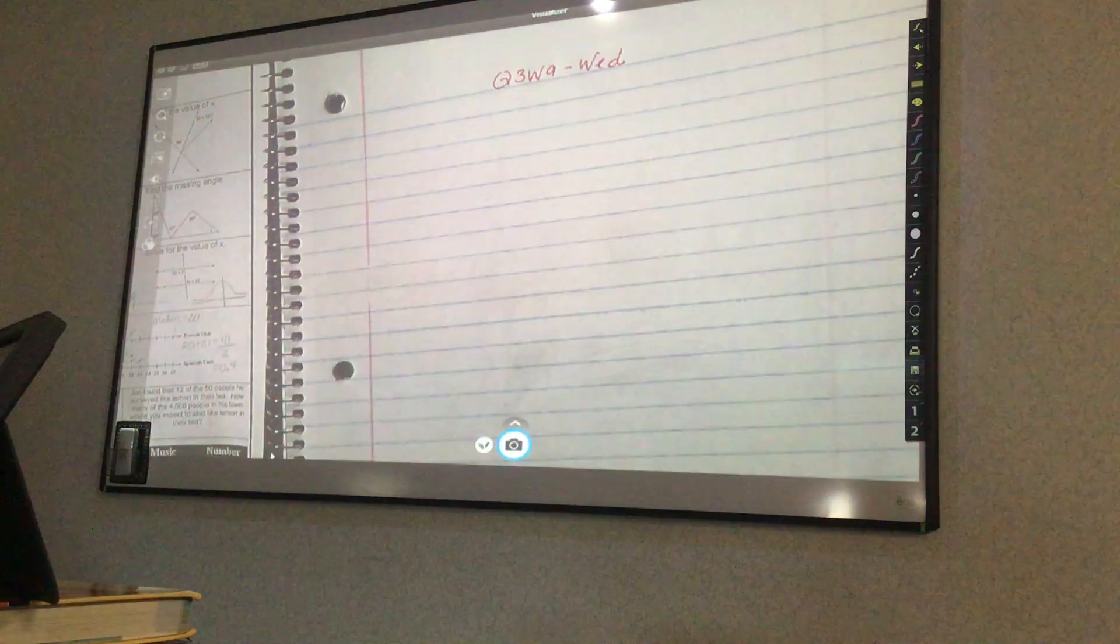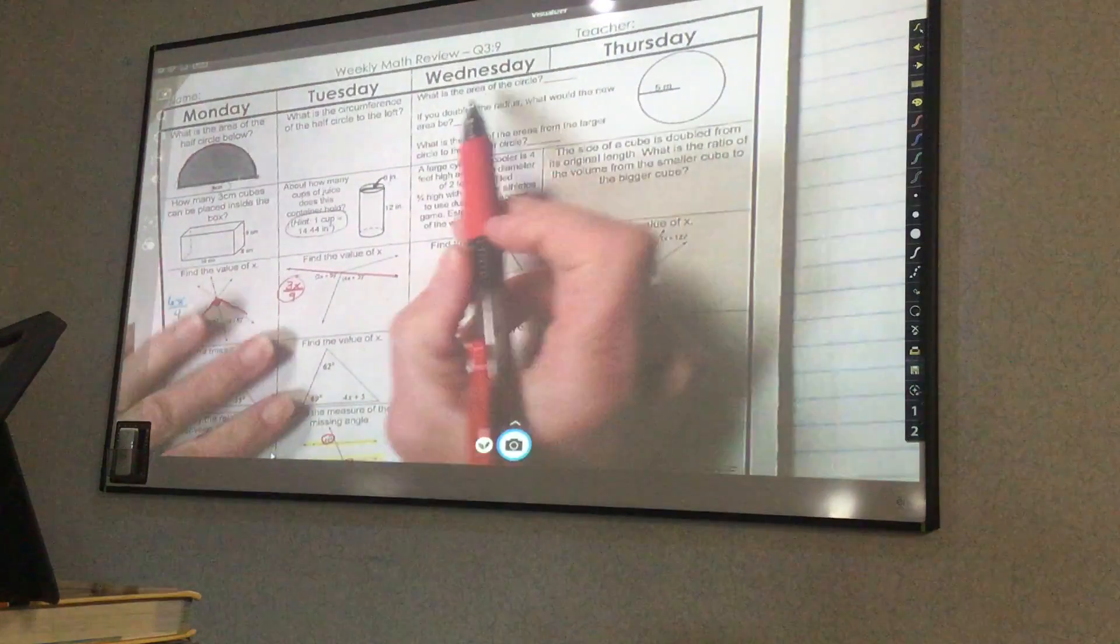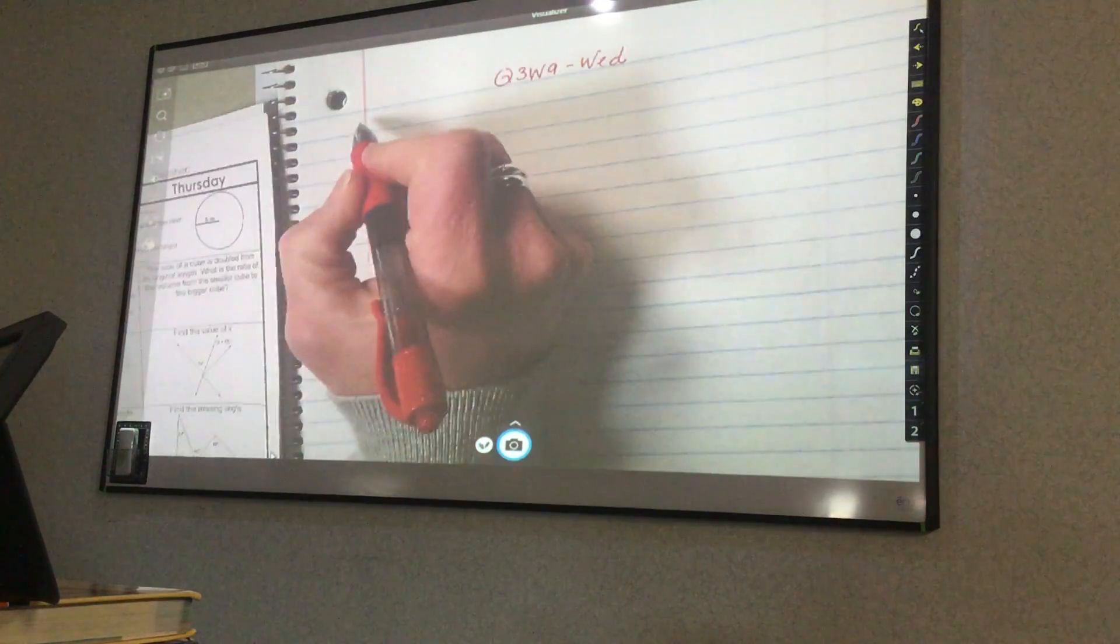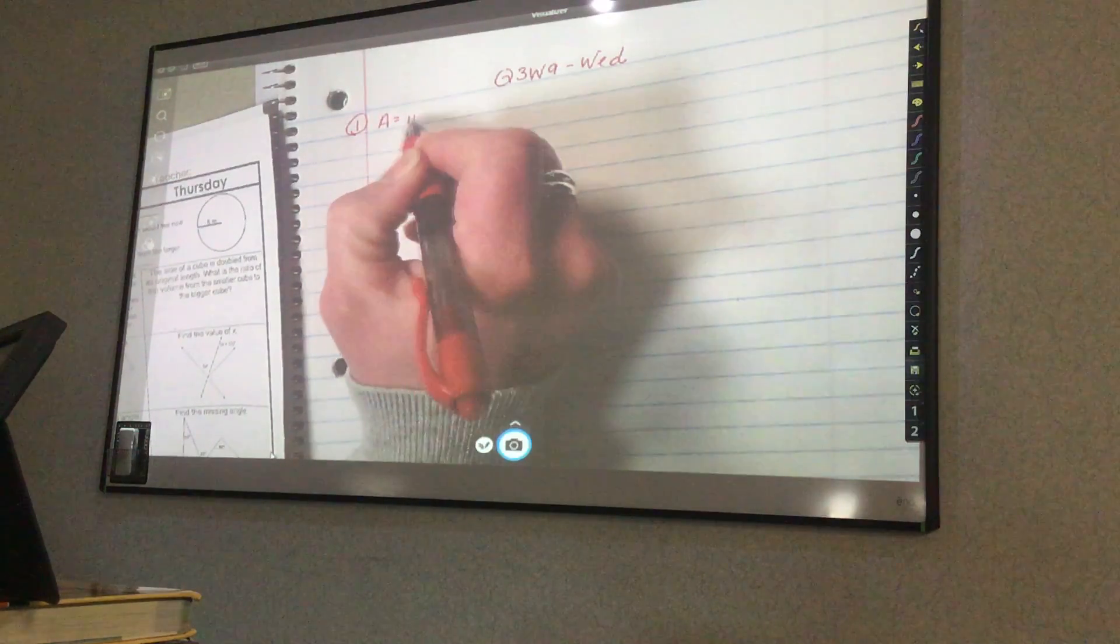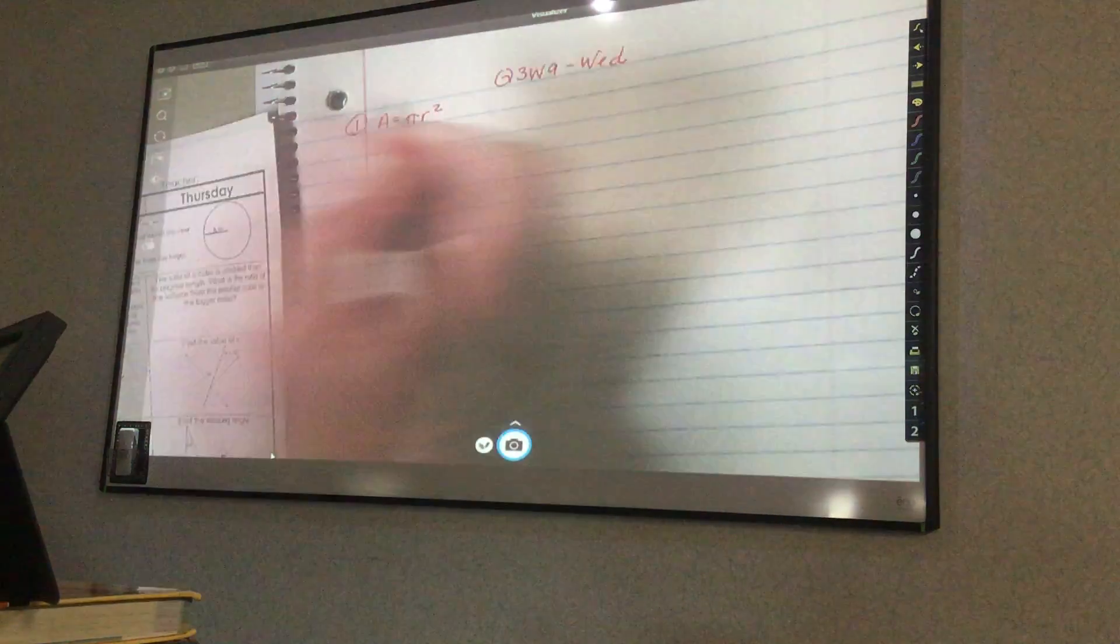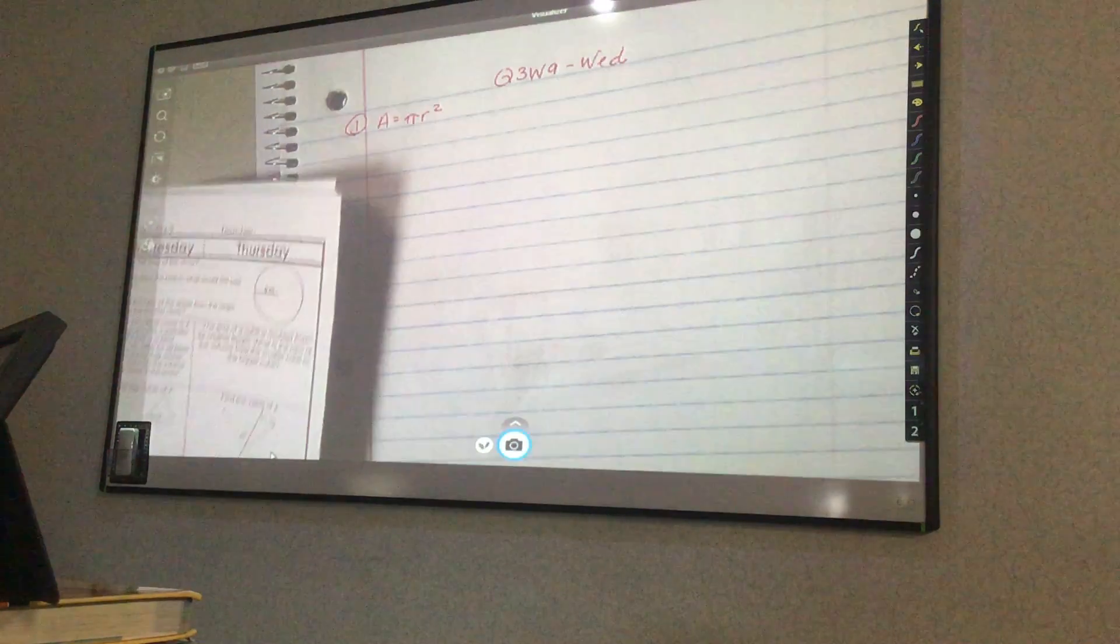We're here for week 9 on Wednesday. He asks us several questions. What is the area of the circle? Well, first you have to write down the formula. Area equals pi r squared. How many of you have that memorized by now? Excellent.